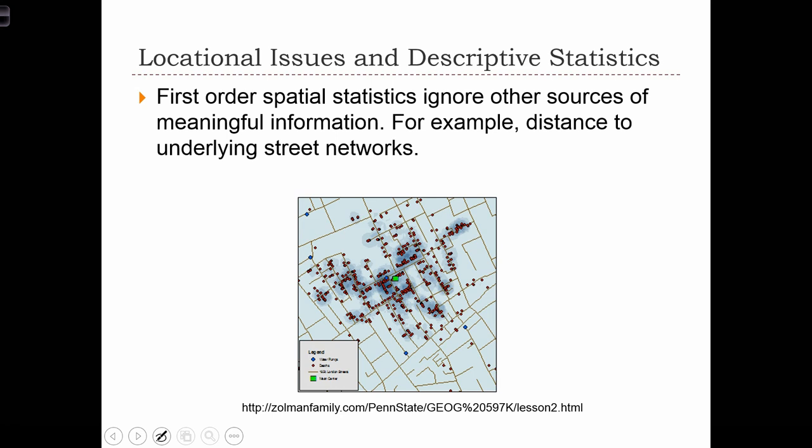So here, in this case, we might describe the point distribution having some sort of dispersion away from the mean center in terms of a standard distance circle or a standard deviational ellipse, but really the appropriate distance statistic to use here would be some kind of distance, a level of dispersion, along the street network away from this source point.